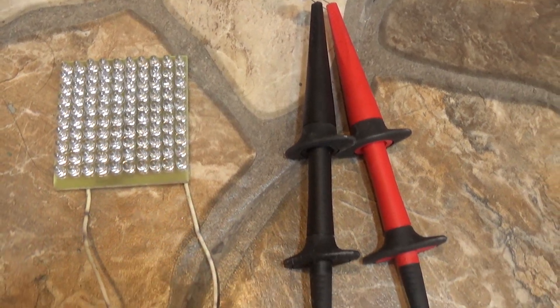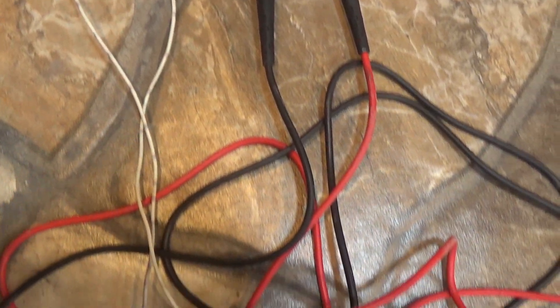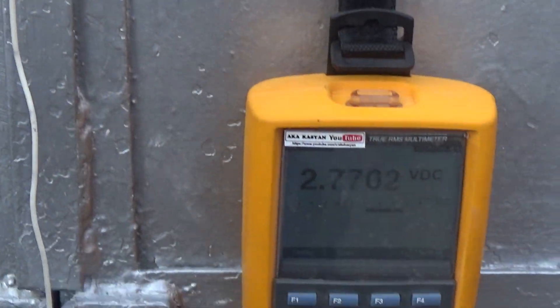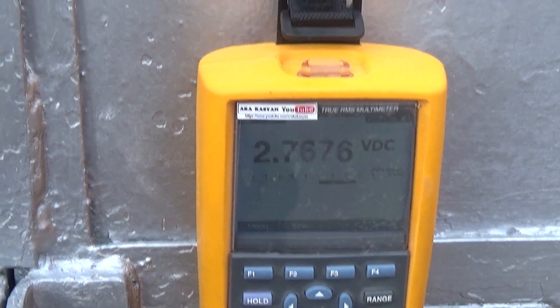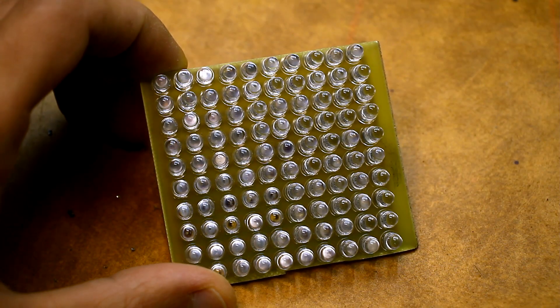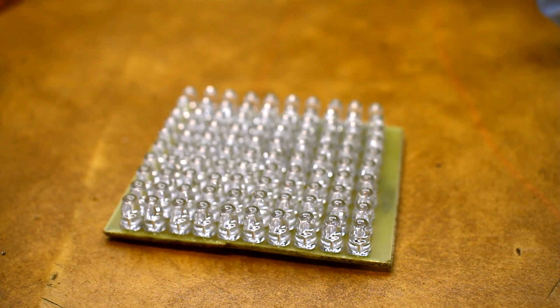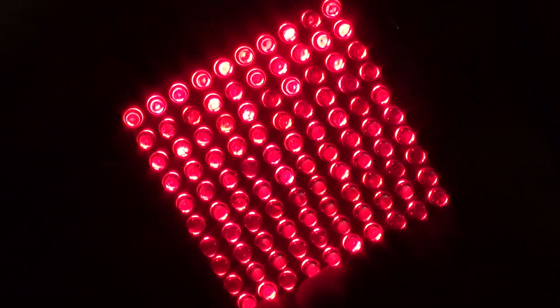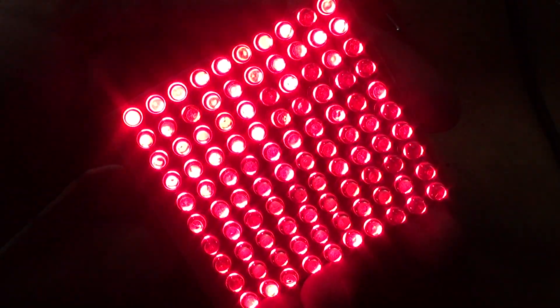Of course, the efficiency of such a LED solar battery is much lower than that of a classical one. Also, they are very critical to the angle of insulation, so such solar cells have no practical sense. But on the other hand, they can be successfully used for their intended purpose as a light source, for example, in all kinds of color music installations and stroboscopes.